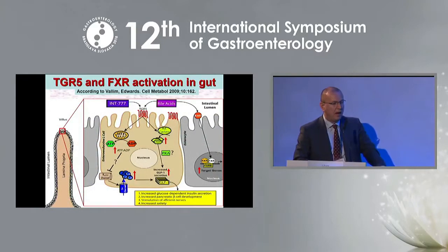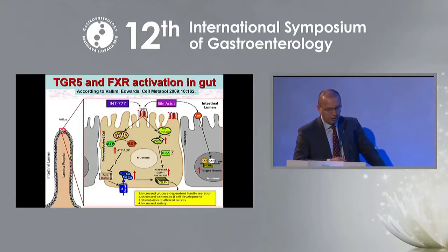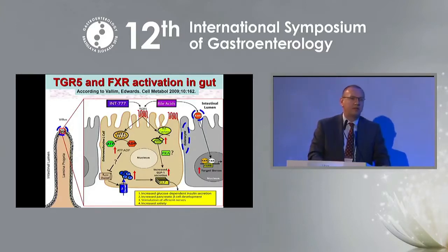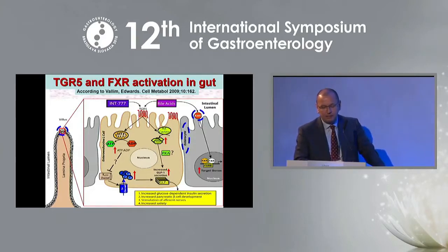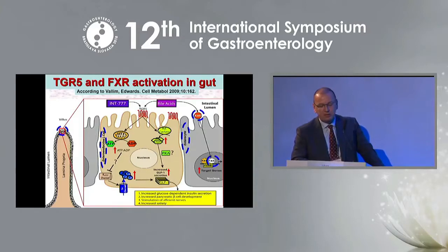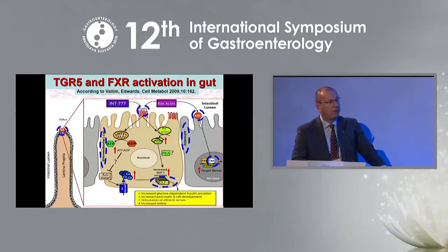This picture shows how bile acids interact within the intestinal lumen. In the intestinal villus, you can see two cell types. The enterocyte is equipped with the ASBT receptor, responsible for transport of conjugated bile acids from the gut lumen into the cell interior; bile acids can also stimulate the FXR nuclear receptor. The second cell population is the enteroendocrine L-cell, equipped with the TGR5 receptor, which through a somewhat complex pathway leads to secretion of glucagon-like peptide 1.